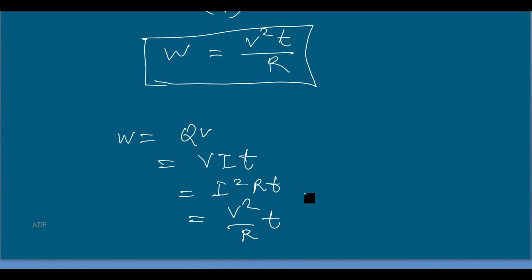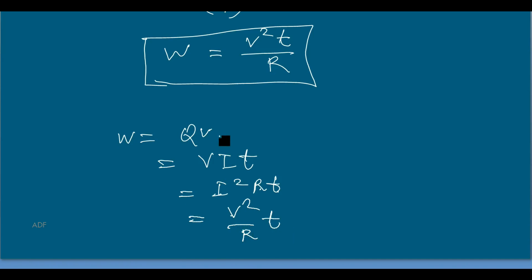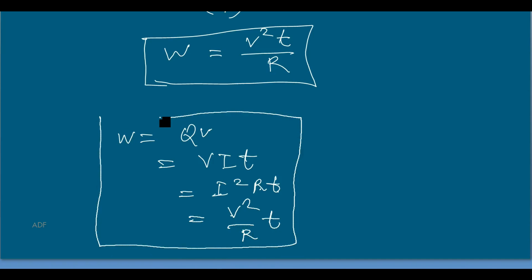We will use these equations frequently while solving problems on electrical power. For example, if we have time, resistance, and current, we use W equals I²RT. If we have voltage, resistance, and time, we use W equals V²T/R. If we have charge and voltage, we use W equals QV. Keep all these equations in mind.